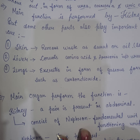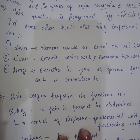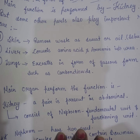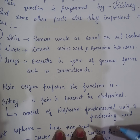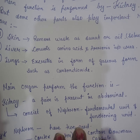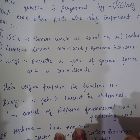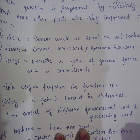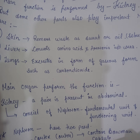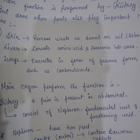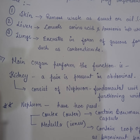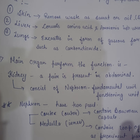The main organ that performs the excretory function is our kidney. A pair of kidneys are present in the abdominal part of our body, and they are brownish in color. The kidneys consist of millions of nephrons. Nephrons are the functional and fundamental units of the kidney, and they consist of two parts.